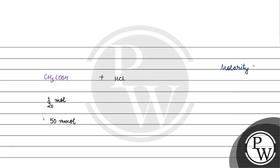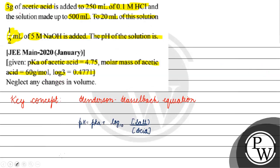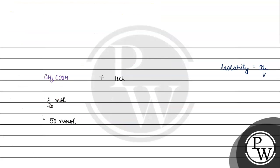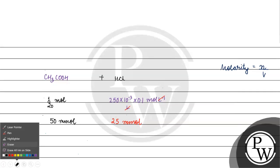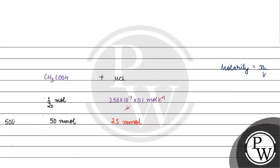Molarity is basically number of moles of solute by volume of solution. So for HCl: molarity is 0.1 molar and the volume is 250 ml, which is 250 × 10⁻³ liters × 0.1 mol per liter. Liters cancel out, giving us 25 millimoles of HCl. We also have a 500 ml solution total.